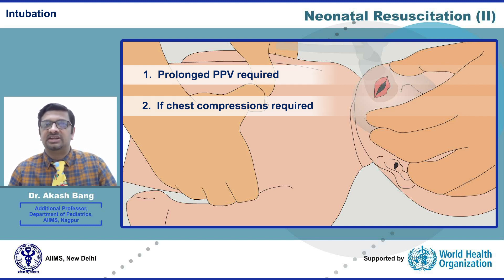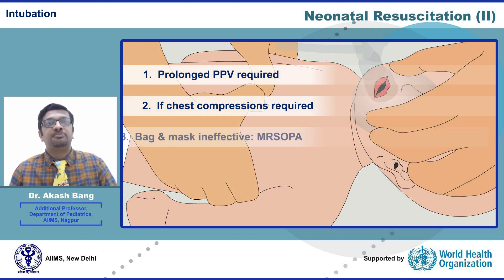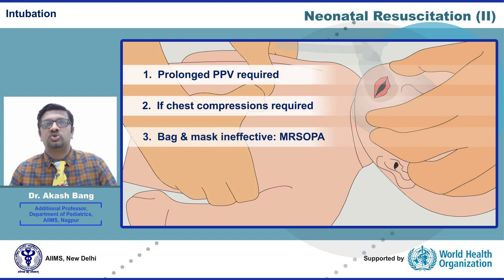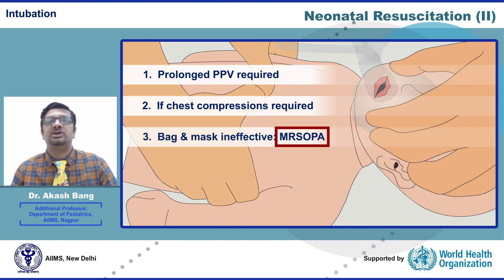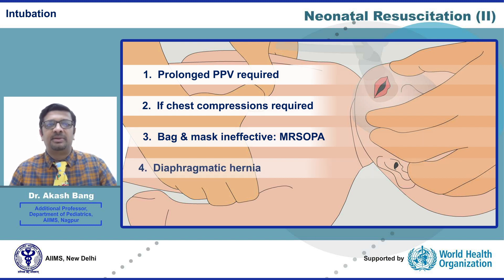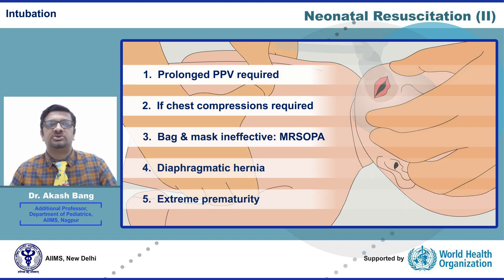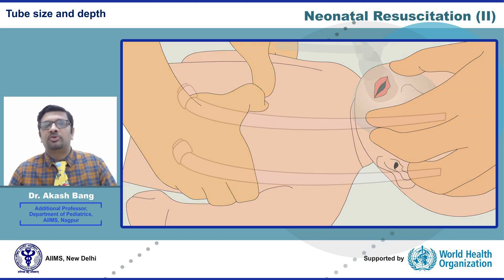Additionally, endotracheal intubation is indicated if PPV is required for a prolonged period of time — maybe more than a few minutes. If PPV is ineffective, then as part of the ventilation corrective steps of MR SOPA, the 'A' stands for alternative airway, meaning intubation. Intubation is also indicated in special circumstances like diaphragmatic hernia or extreme prematurity.